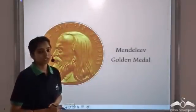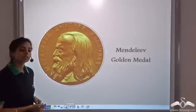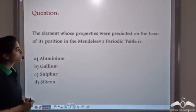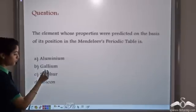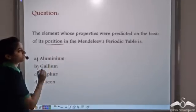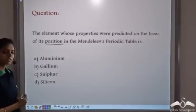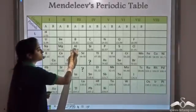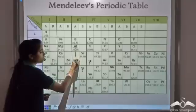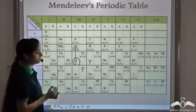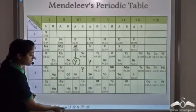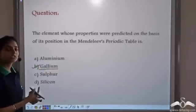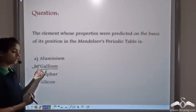The Russian Chemical Society yearly awards the Mendeleev Golden Medal to scientists for their contribution to chemical science and technology. Now, which element's properties were predicted on the basis of its position in Mendeleev's periodic table? Aluminium was already known when Mendeleev gave his table. He predicted the properties of an element one place below aluminium, named Eka-aluminium, whose properties matched the later-discovered element gallium. So the answer is gallium.